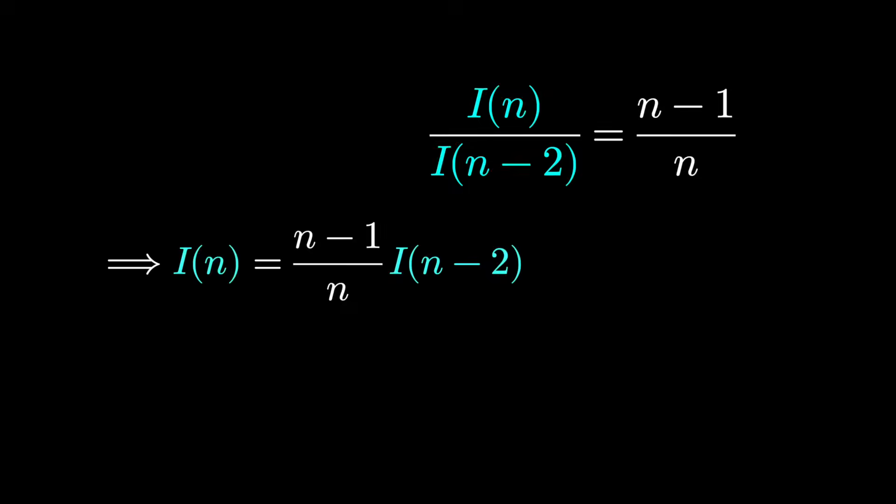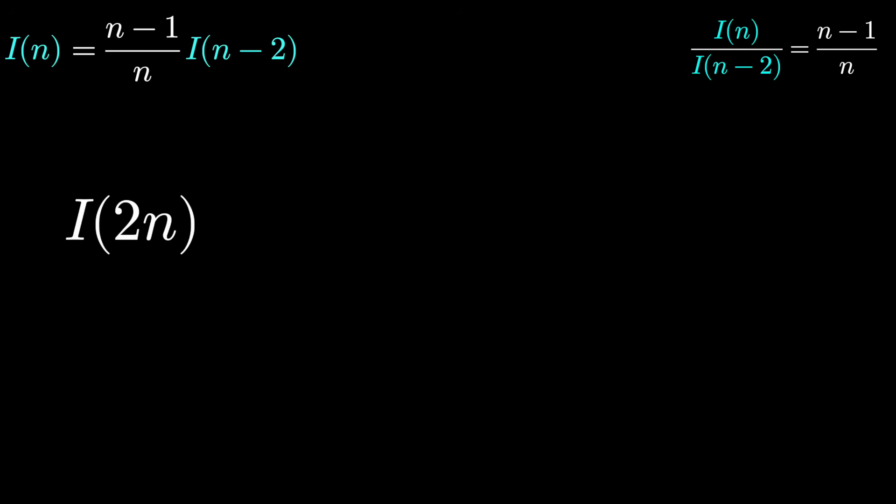To make that happen, let's look at I(2n). That would guarantee the power is even. Throw this into the recursive formula. I(2n) would be (2n-1)/(2n) times I(2n-2). And since this is a recursive relationship, we could use the recursion again on I(2n-2). What would that be? It would be (2n-3)/(2n-2) times I(2n-4). We're basically just dropping the recursion down by 2.